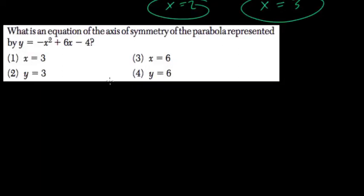What is the equation for the axis of symmetry of this parabola? Well, the axis of symmetry always equals negative b over 2a.